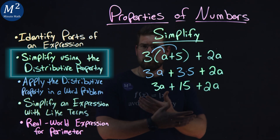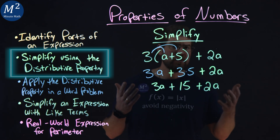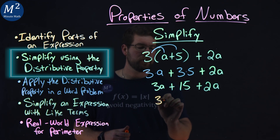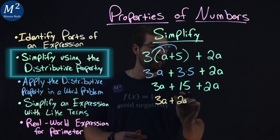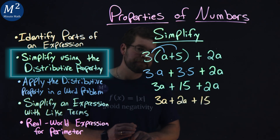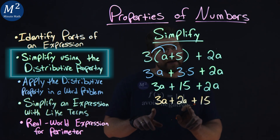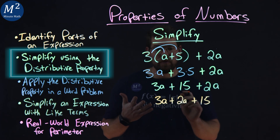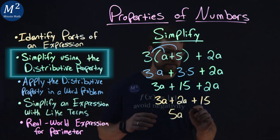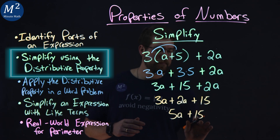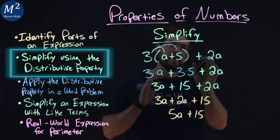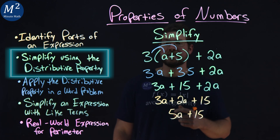Now I want to reorder this to have our like terms next to each other. Since it's all just addition, I can do that. I see 3a and 2a are like terms, so I'll write those first: 3a plus 2a, then bring down the plus 15 at the end. Now lastly, we want to combine our like terms: 3a plus 2a is 5a. The 15 has no more like terms, so we bring down the 15 with addition, and that's it. We simplified our expression using the distributive property of 3 times (a plus 5) plus 2a, and we got 5a plus 15.